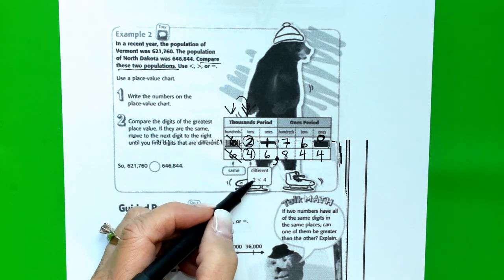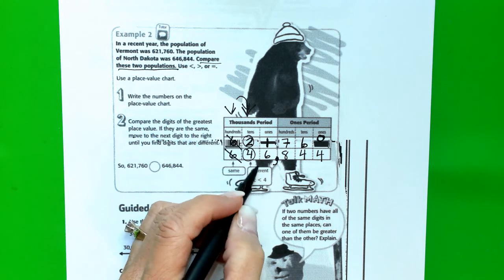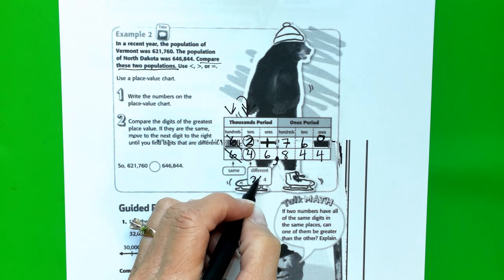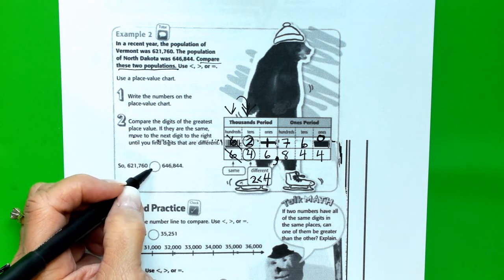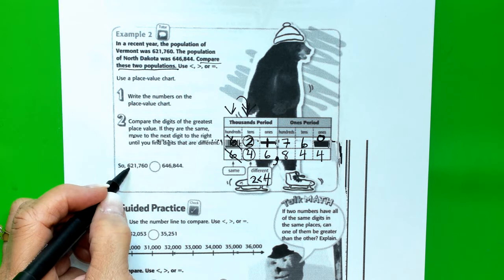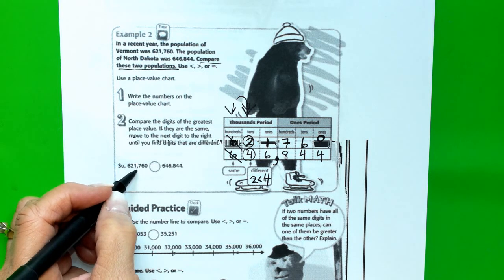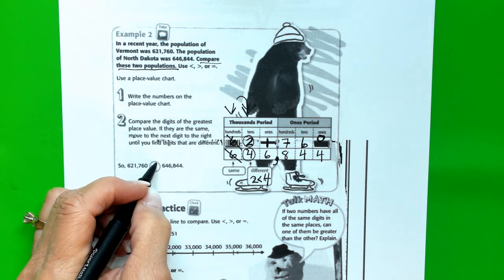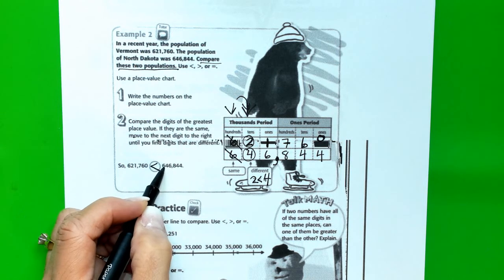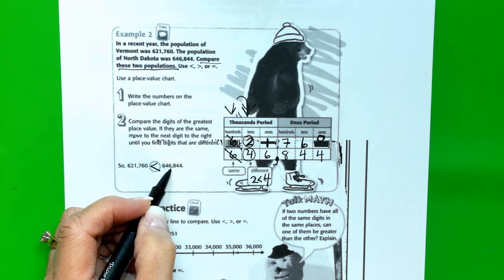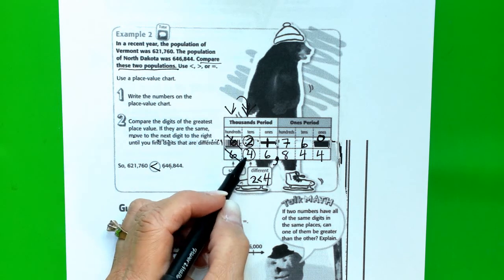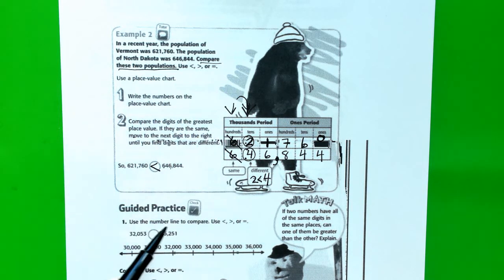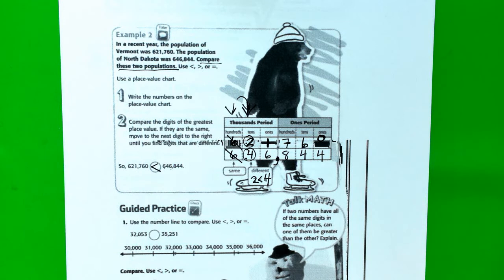So, clearly, these are the same. 2 is less than 4. You can see they wrote that right here in our box. So, that means that 621,000 and change is going to be less than 646,000 and change. Because the 2 is less than the 4. Thanks for watching and look to your teacher for instruction.